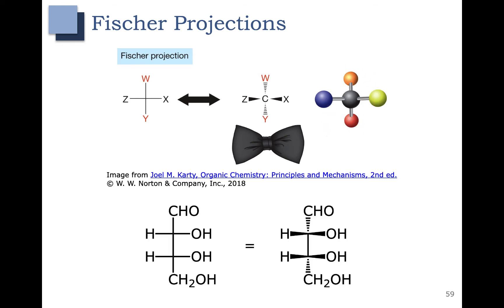Fischer Projections can be used for molecules with multiple carbons. An example is shown down here. Again, the horizontal lines are sticking out at us and the vertical lines are sticking back. It's probably helpful in the Fischer Projection to just add in those hashed and wedged lines, as shown here on the bottom right.